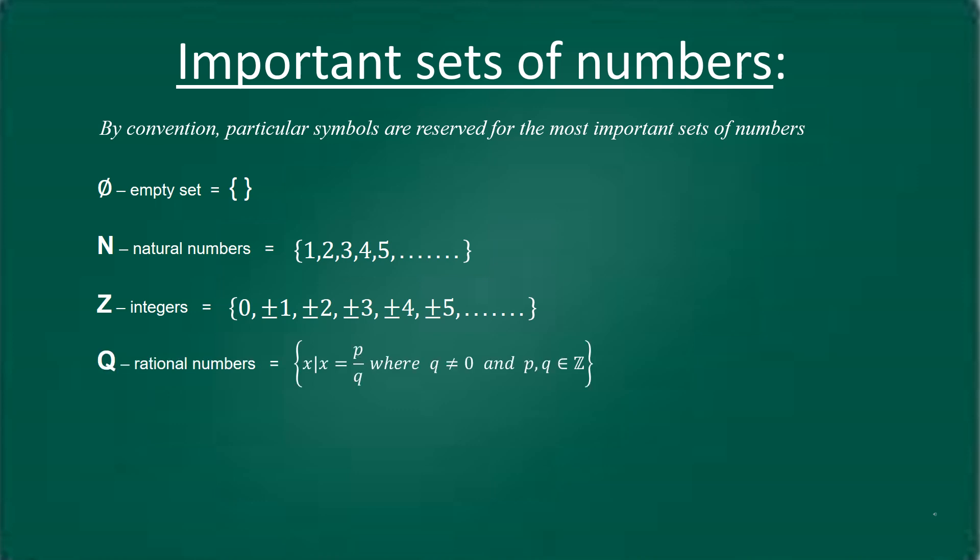The set of rational numbers: the numbers which can be expressed in the form of p/q where q ≠ 0 and p, q belong to integers. Such types of numbers are known as rational numbers and this collection is known as the set of rational numbers, denoted by capital Q.